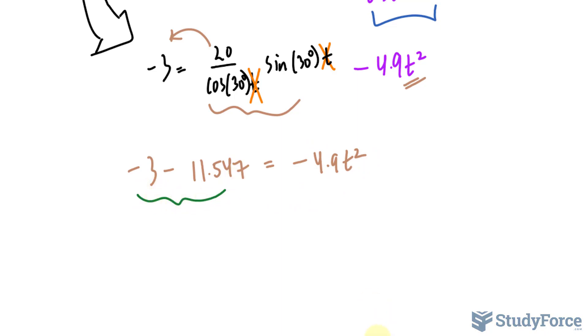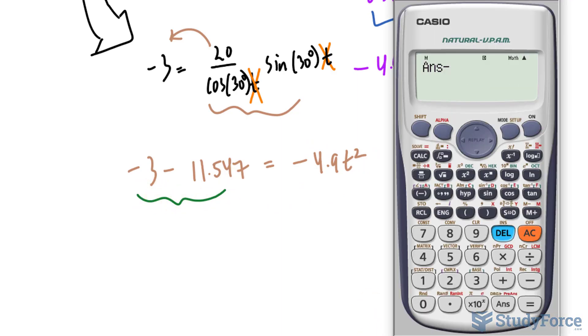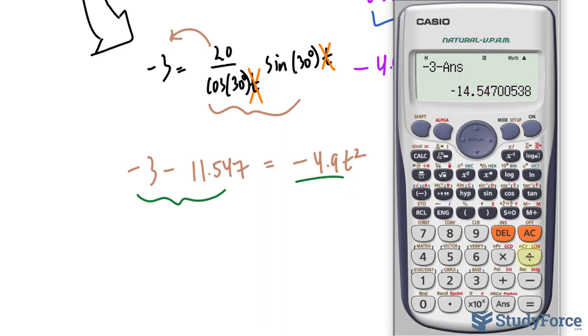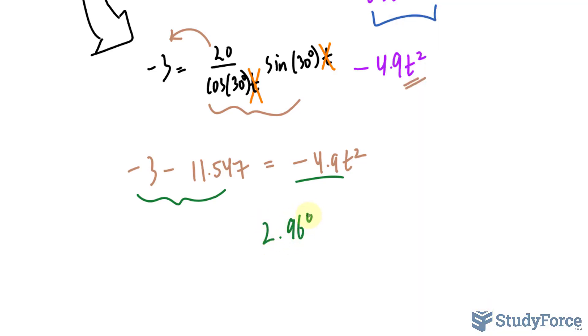And let's simplify this further. Negative 3 minus the previous answer. You should get that in your calculator. So that's the left side of the equation. And to get rid of negative 4.9, we divide both sides by negative 4.9. So I'll take this and divide it by negative 4.9. And this gives me 2.968 is equal to t squared.